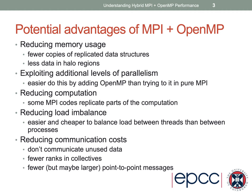It might be possible to reduce load imbalance, because it's easier and cheaper in general to balance load between threads than between processes. We might also be able to reduce communication costs: we can avoid communicating unused data, end up with fewer ranks in MPI collective operations, and send fewer — though possibly larger — point-to-point messages.